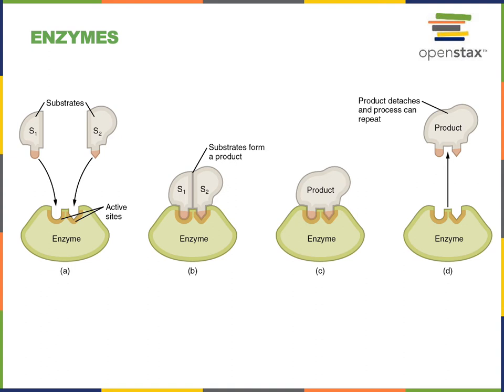An enzyme is a biological catalyst. A catalyst is a chemical that will speed up a chemical reaction but is not consumed in the chemical reaction, and therefore can be reused over and over again. An enzyme is typically made of protein, although some enzymes are made of nucleic acids — for example, the ribosome has a catalytic region made out of RNA, but the majority of enzymes are proteins.